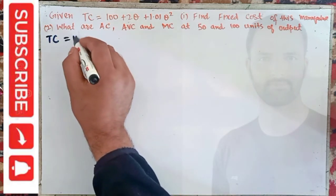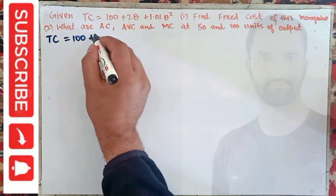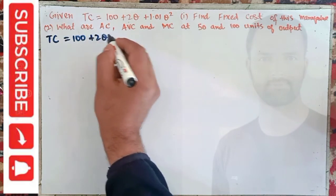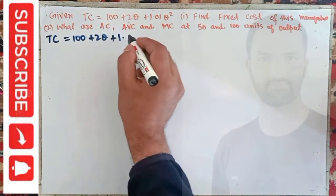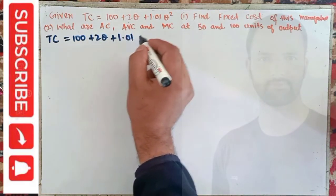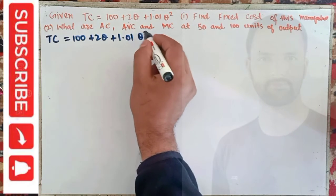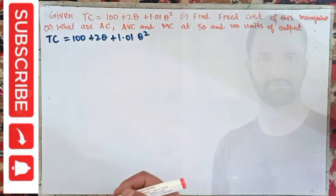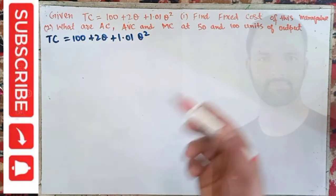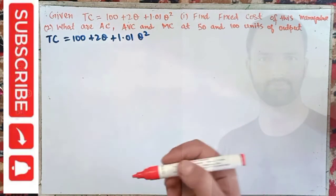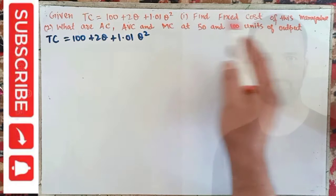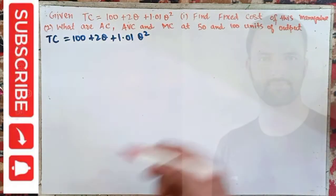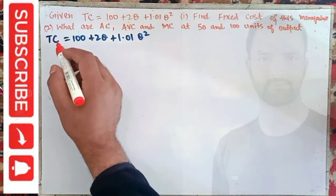So first, we are given the total cost function: TC = 100 + 2Q + 1.01Q². This is our total cost function. Let me use the red color here to save space.